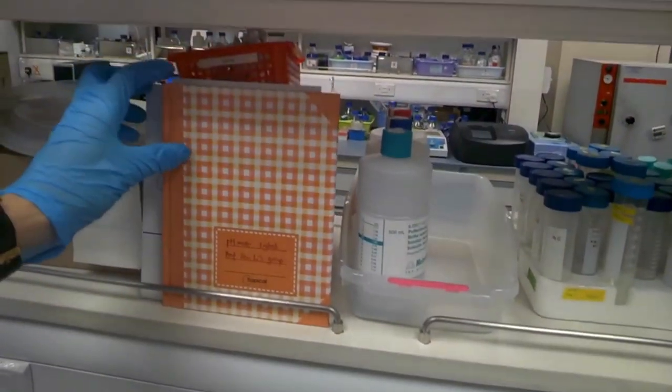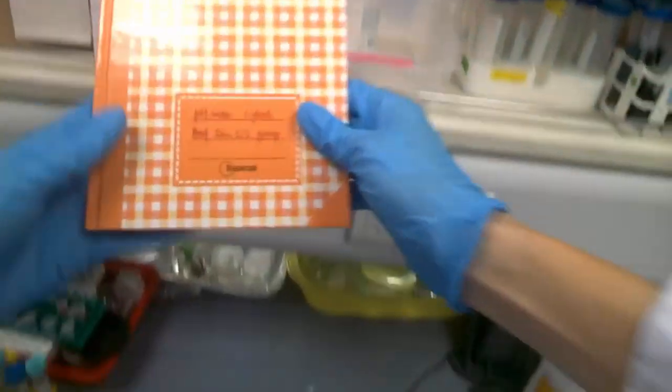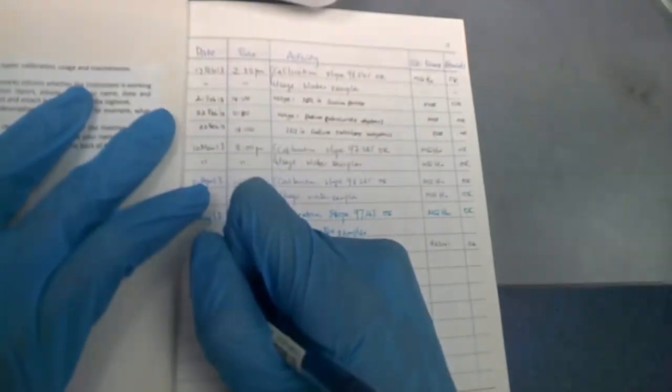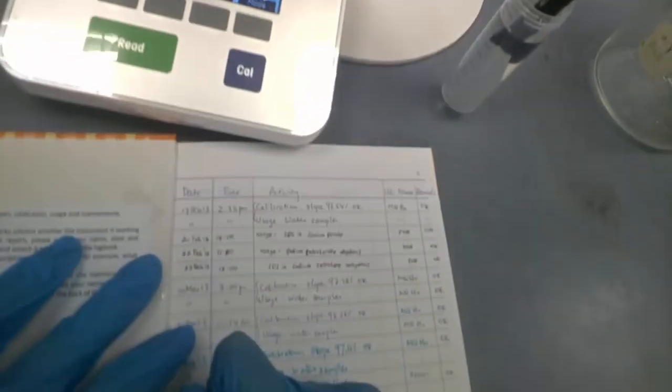After performing any usage of this instrument, you always have to record on this logbook here. Just placed right above this orange logbook, pH meter. Open it. Read instructions. Activity column. Please. Calibration. Usage. Maintenance. So in this case, I did a calibration and demonstration.